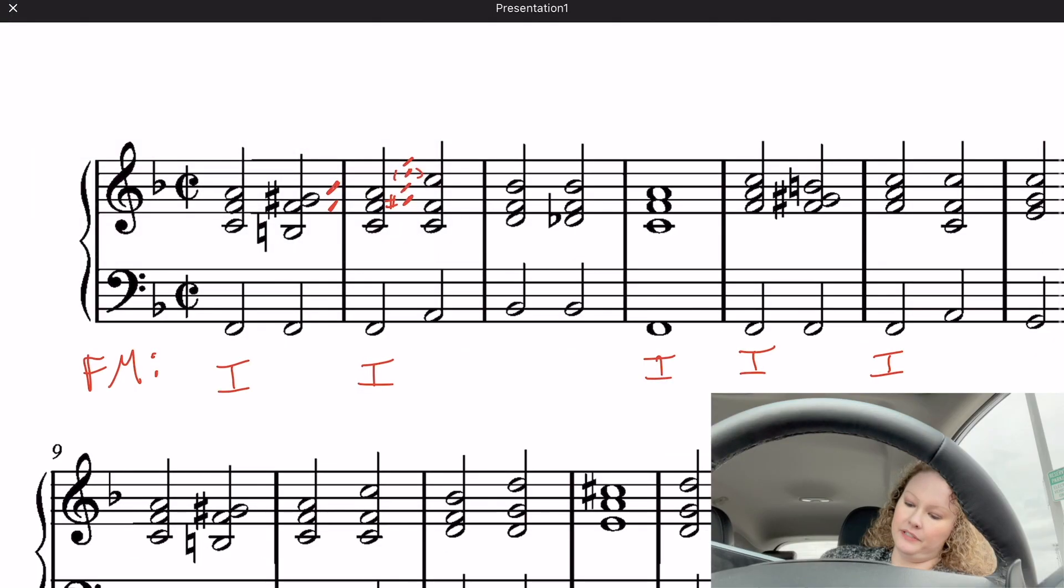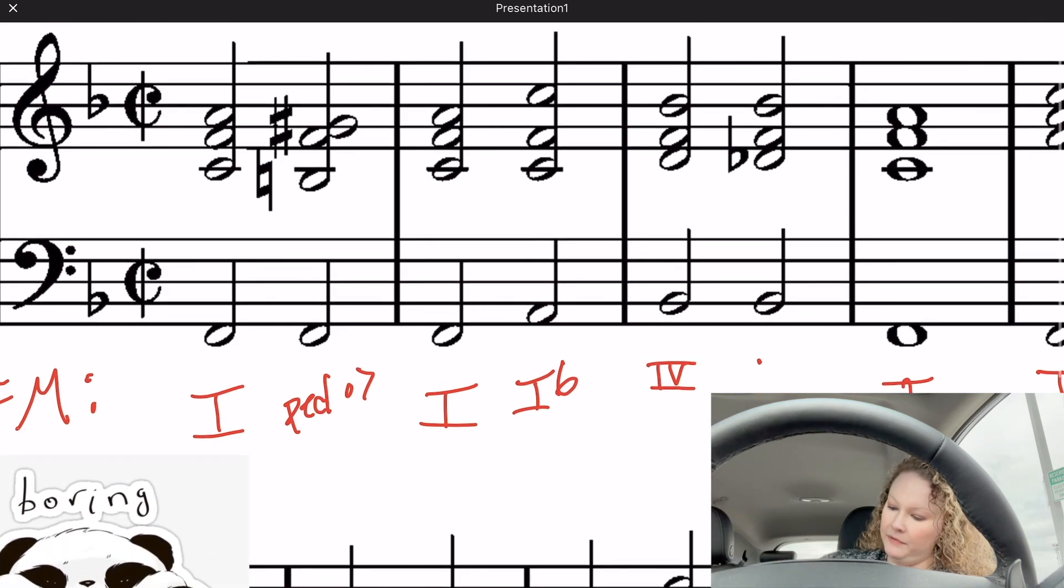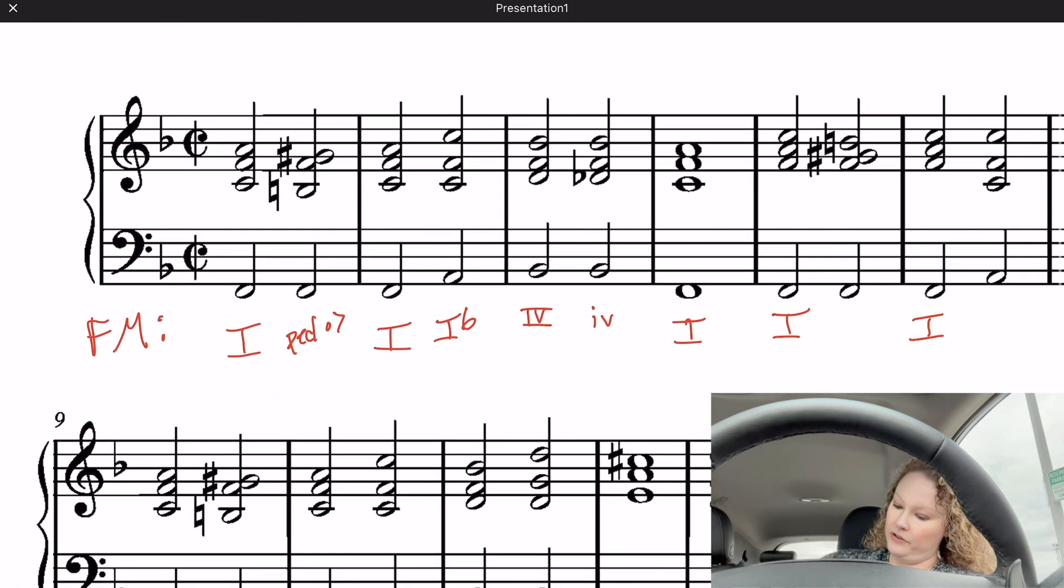I'm just going to write this as diminished 7, because that's all I have to do, which is kind of glorious. And then we go to a 1-6. So really, I should label this as a passing. Is it passing? No, it's pedal. It's a pedal diminished 7. Before we go to a could-not-be-anymore-boring 4 chord, lovely. Before we go to a minor 4, noice. Before going to 1.